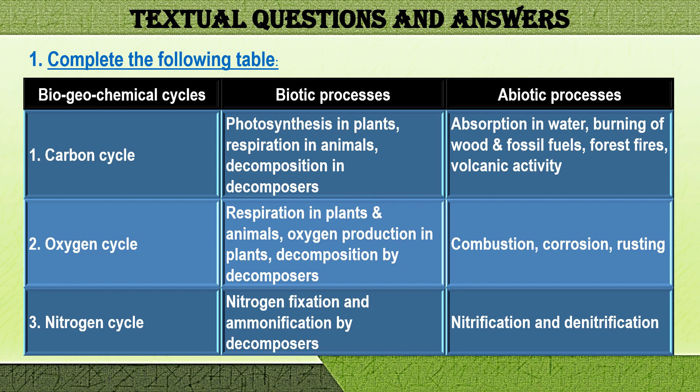Forest fires and volcanic activity also count as abiotic processes in the carbon cycle. The second biogeochemical cycle is the oxygen cycle. Its biotic processes are respiration in plants and animals, oxygen production in plants, and decomposition by decomposers. The abiotic processes are combustion or burning and corrosion or rusting. The third cycle is the nitrogen cycle. Its biotic processes are nitrogen fixation by bacteria and ammonification by decomposers. The abiotic processes are nitrification and denitrification.